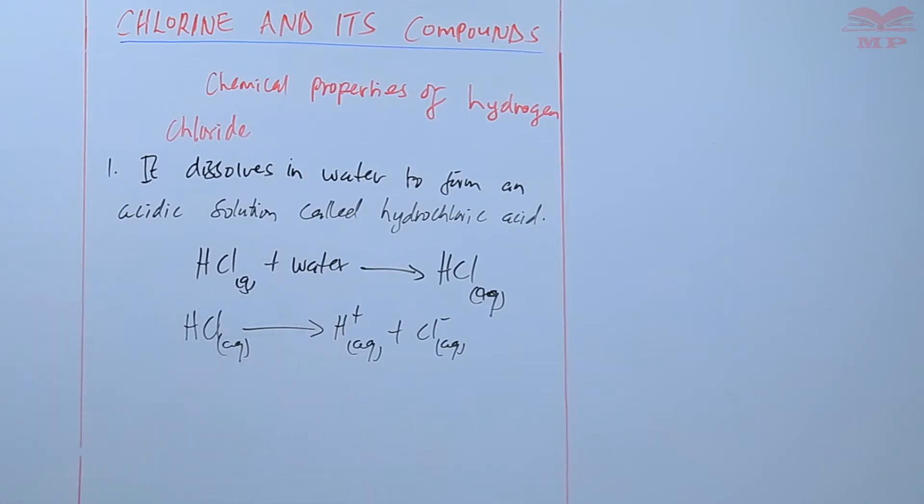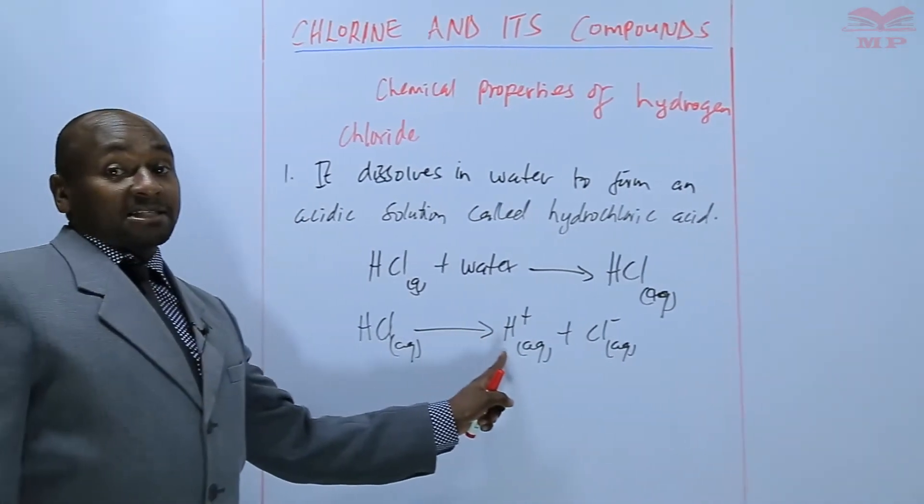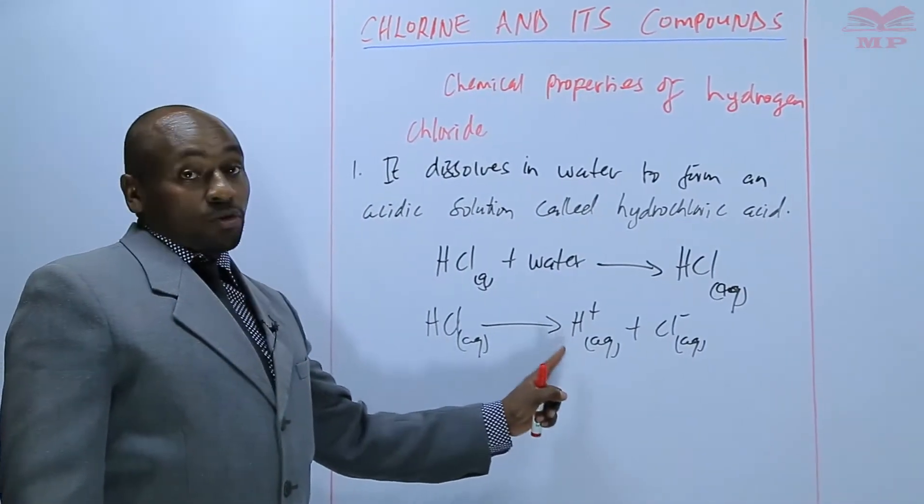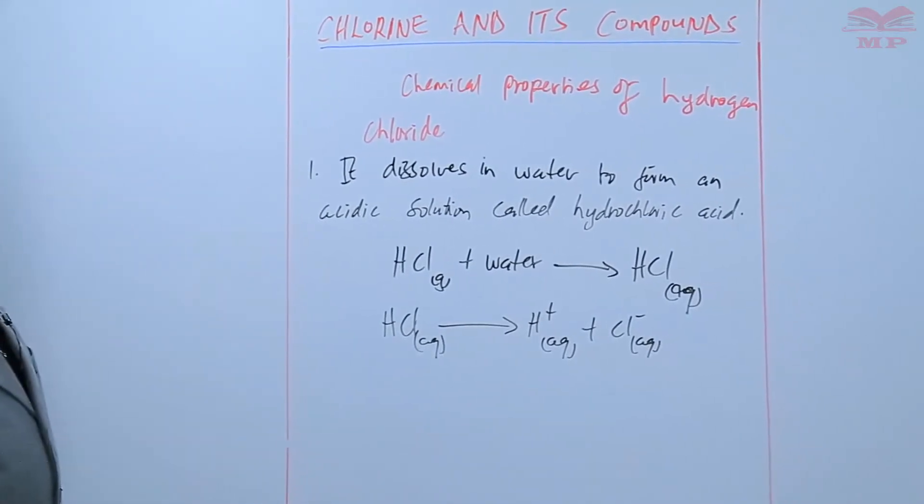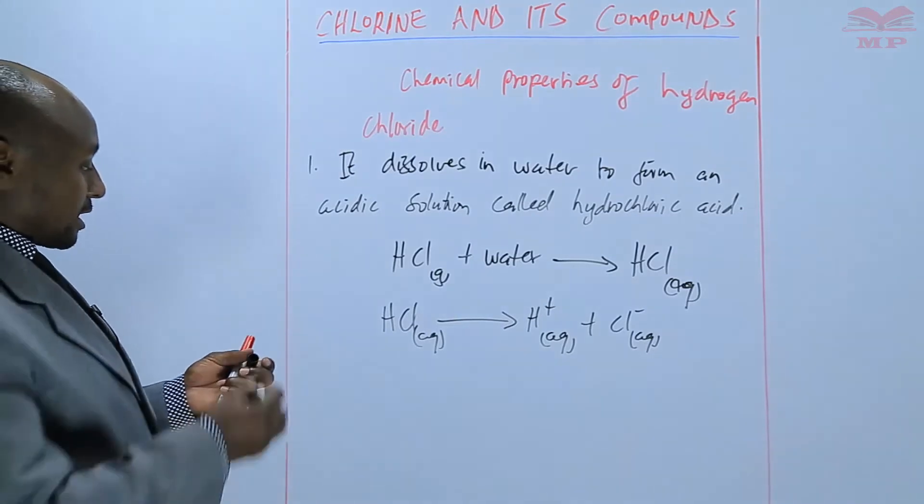And that's why we earlier said that when you introduce a moist blue litmus paper, that paper turns red because of the presence of hydrogen ions that make the solution acidic.